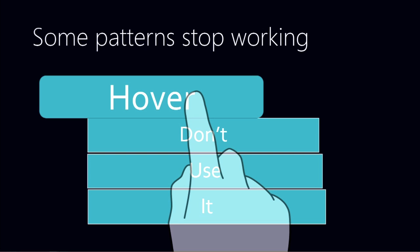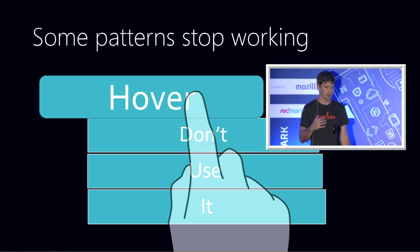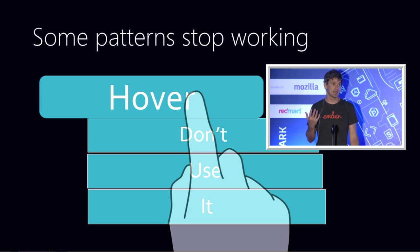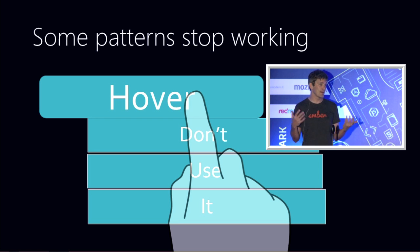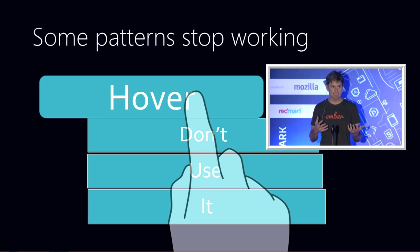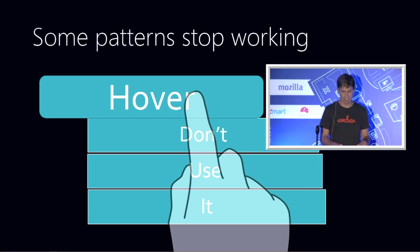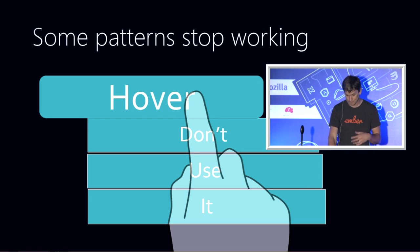There are things that stop working when you use the web in a touchable manner. Hover menus are a terrible pattern for touch — interactions that require hovering over an element on the page become impossible. Some patterns like this stop working and you need to reconsider which methods you're using as you develop for touch.